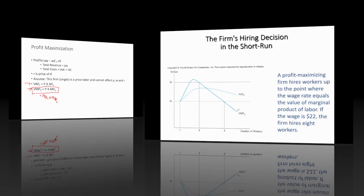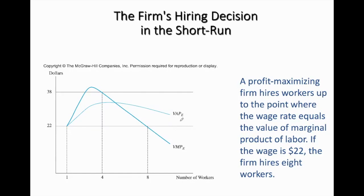This is the profit equation: profit equals price times quantity minus W (wage) times E (number of workers) — which is the cost of hiring workers — minus D, the cost of capital, where R is the price of capital and K is capital. The value of marginal product of worker and the value of average product of worker curves have shapes similar to the marginal product and average product curves respectively. The difference is that the VMP is the marginal product multiplied by price, and similarly for VAP.